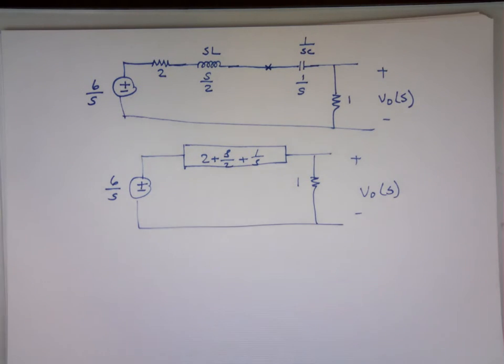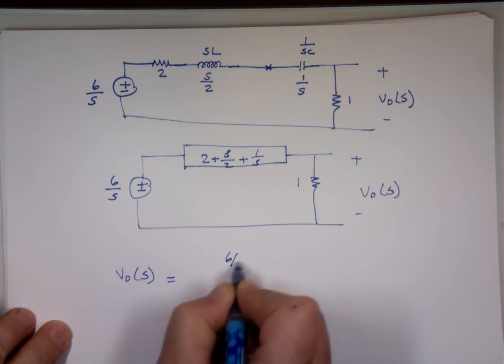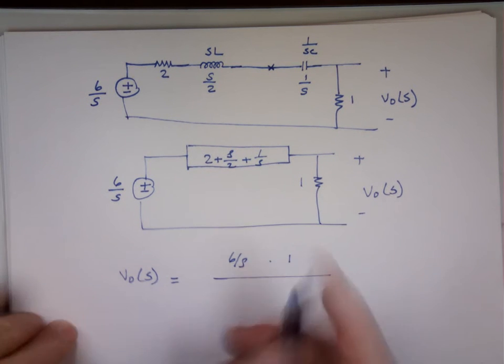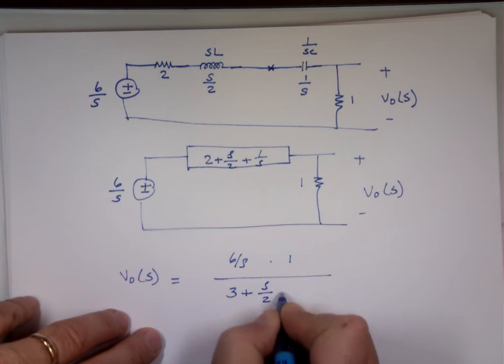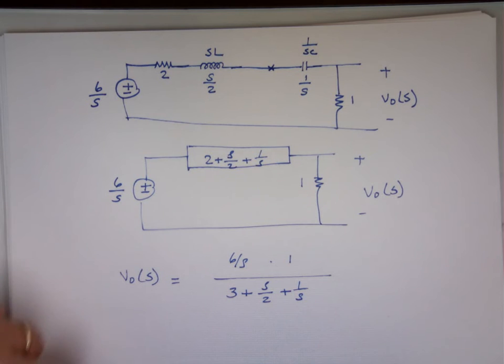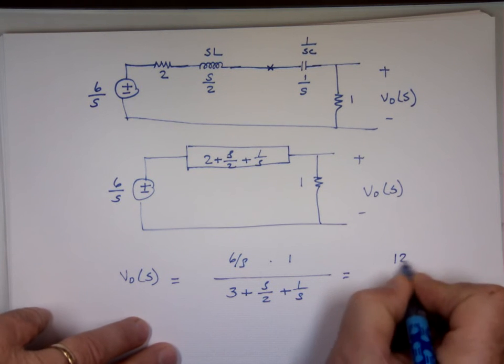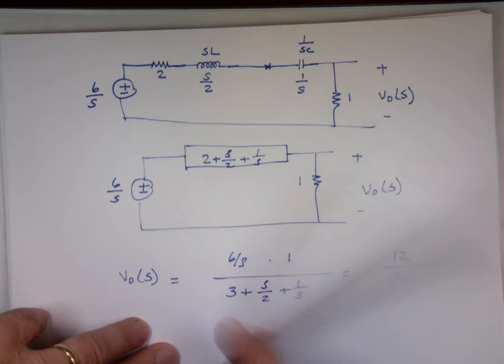Can I find V_out now? What would I use? Voltage division. V_out as a function of s is equal to 6 over s times 1 over the sum of them. When you add this to that, that would be what? 3 plus s over 2 plus 1 over s. Now if I multiply the top and the bottom by 2s, I will have what? 12 over s² plus 6s plus 2.